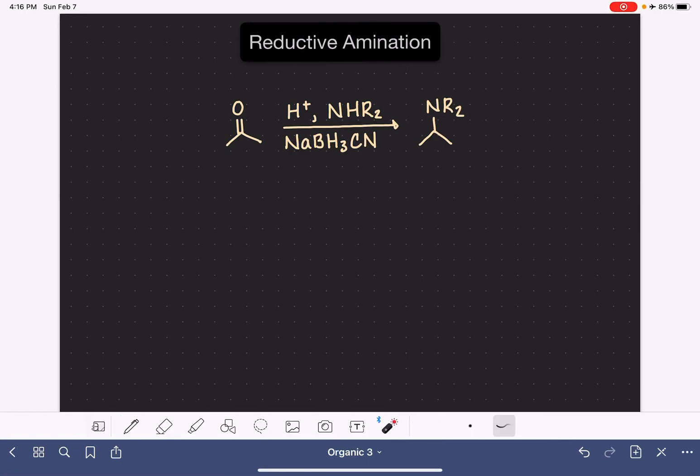Reductive amination is a reaction that converts either an aldehyde or ketone to a primary, secondary, or tertiary amine. So here I'm showing a ketone, but I want to make a note that this is appropriate for either an aldehyde or a ketone, your choice.